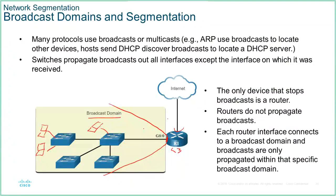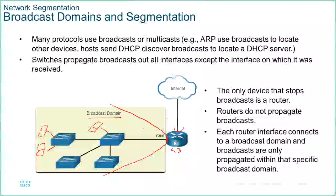All switches will forward the broadcast out through all of their ports, and it will only stop at the router. So every switch needs to propagate the broadcast out of all of its interfaces. The layer 2 address will be FF:FF:FF:FF:FF:FF and the IP address will be all ones in the host portion.